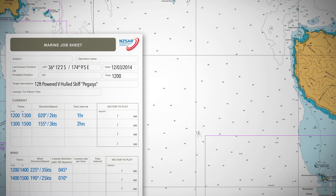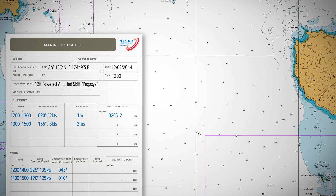First, let's calculate the effect of the two water currents. 2 knots at 020 degrees times 1 hour equals 2 nautical miles in a 020 degree direction. 3 knots at 155 degrees times 2 hours equals 6 nautical miles in a 155 degree direction.